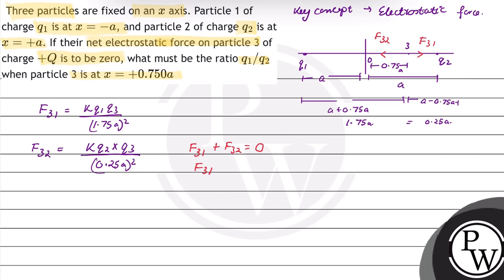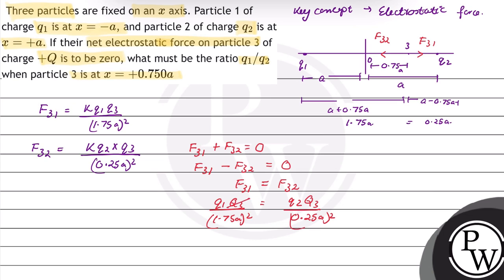So, on putting the direction, F31 minus F32 will be equal to 0. Therefore, force on particle 3 due to particle 1 equals force on particle 3 due to particle 2. Putting values: q1 times q3 upon 1.75a whole square equals q2 times q3 upon 0.25a whole square. We can cancel the charge on particle 3, giving q1 upon q2 equals 1.75 upon 0.25, whole square.